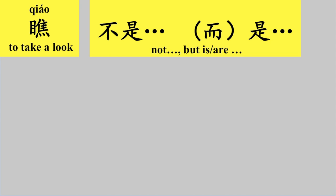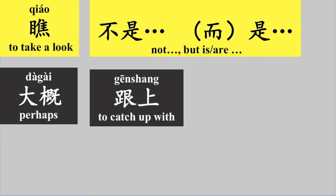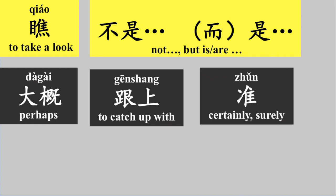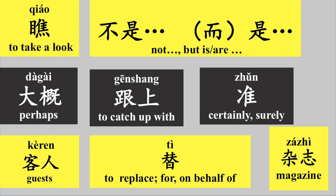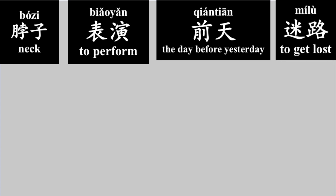好，那我们现在来复习一下词汇。瞧，瞧小鸽子回来了。不是，而是，不是小鸽子，是大鸽子。大概，大概是小鸽子的姐姐。跟上，准，爸爸我们快跟上他，准能找到小鸽子。客人，有客人来看你们了。替，杂志，替我把杂志拿进来。脖子，我的脖子有点痒。